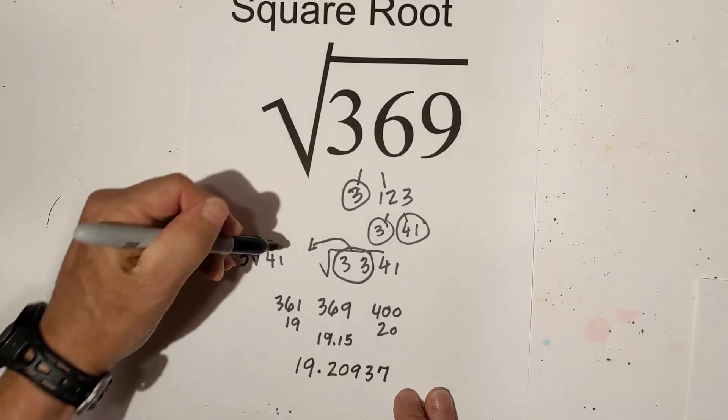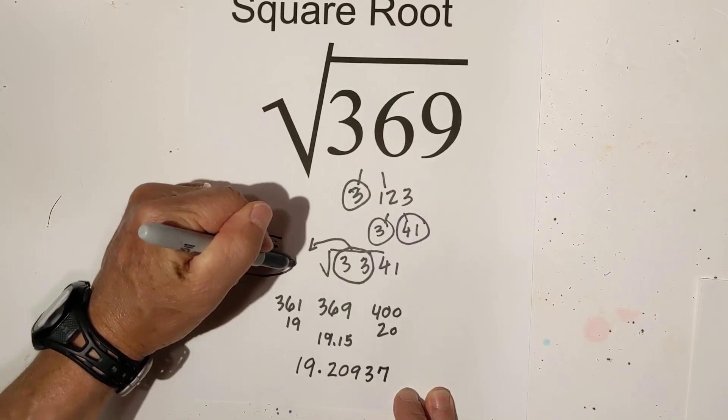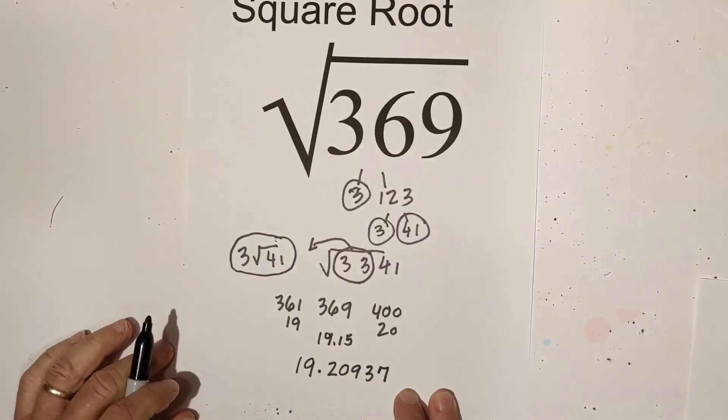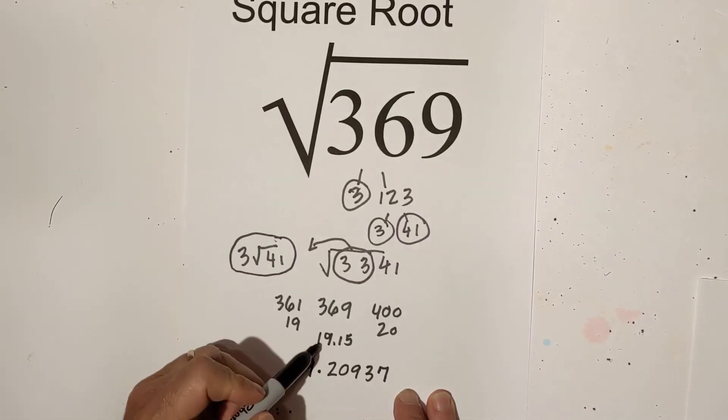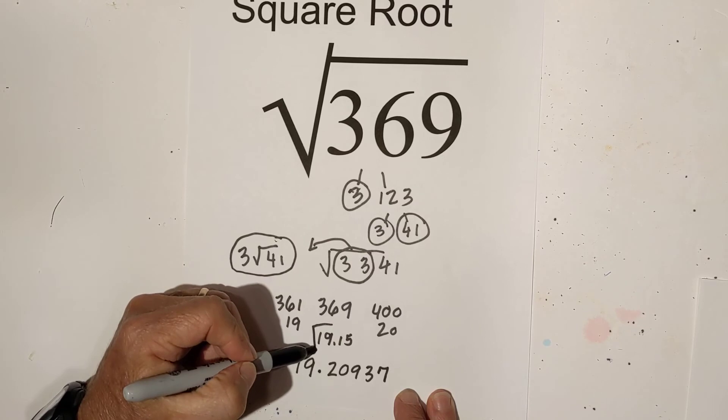So again, in summary: simplified, it's 3 square root of 41. Here's my best guess.